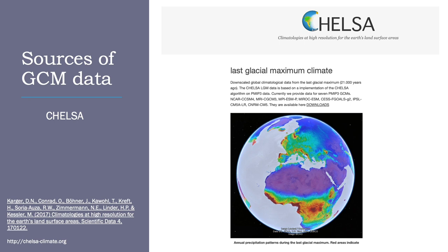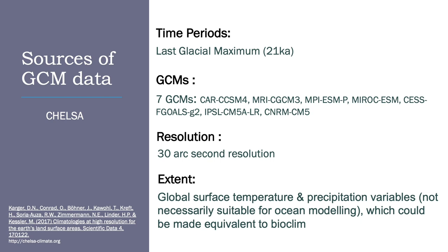CHELSA is another data source for paleoclimatology based on PMIP3 data. These data are based on an implementation of the CHELSA downscaling algorithm — Climatologies at High Resolution for the Earth's Land Surface Areas. The great thing about these data is that they are very high resolution, at 30 arc second resolution, which is about one kilometer. They are only available for the Last Glacial Maximum for seven GCMs, providing temperature and precipitation values from which you can generate the 19 bioclimatic variables. As a result, they are not suitable for marine modeling.